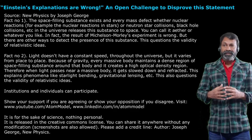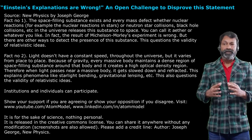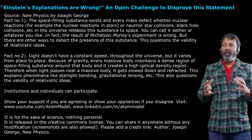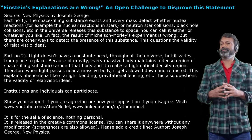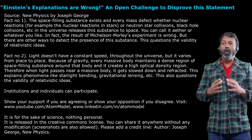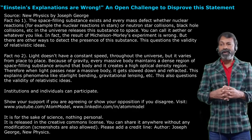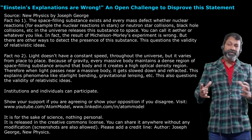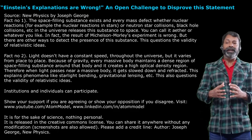Fact number 2: Light does not have a constant speed throughout the universe, but it varies from place to place. Because of gravity, every massive body maintains a dense region of space-filling substance around it, creating a high optical density region. Therefore, when light passes near a massive body, it gets slowed down and refracted. This explains phenomena like starlight bending, gravitational lensing, etc. This also questions the validity of relativistic ideas.